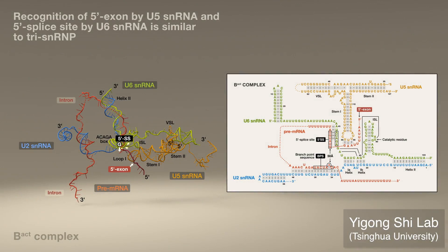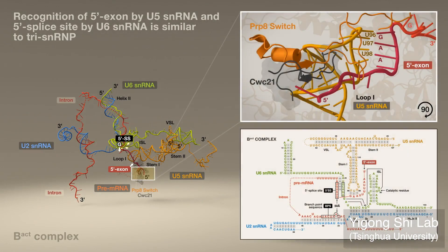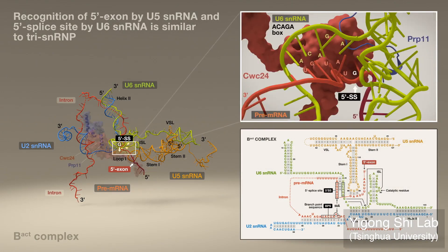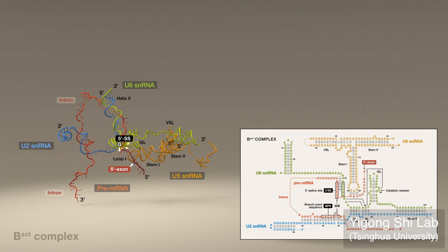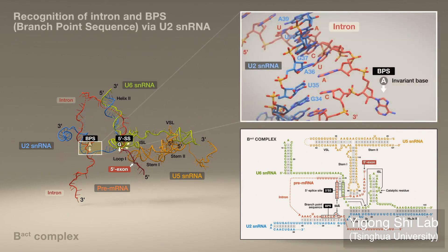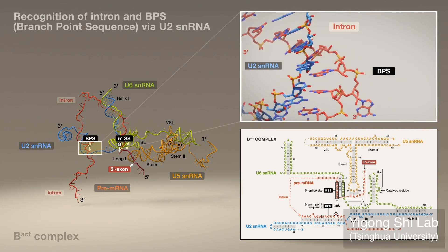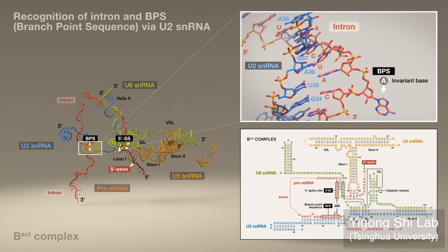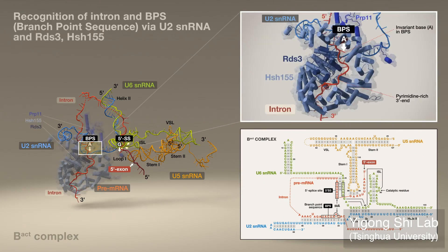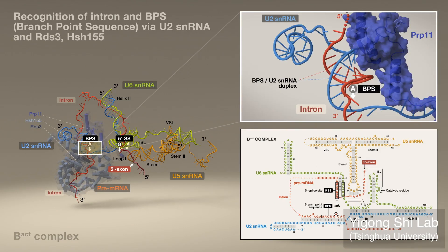The 5' exon and 5' splice site are recognized similarly in the B-ACT complex, and are stabilized by CWC21 and PRP8, and CWC24 and PRP11. Recognition of the intron and branch point sequence occurs via the U2 RNA, and the proteins RDS3 and HSH155, which binds the pyrimidine-rich 3' end. PRP11 contacts the BPS-U2 duplex.